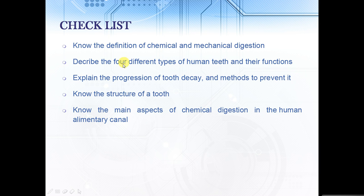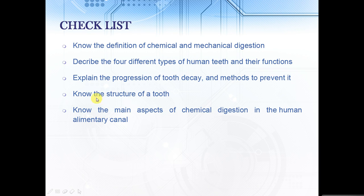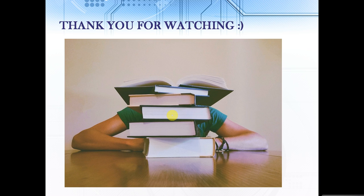Here's a quick checklist of what you should be able to know: the definition of chemical and mechanical digestion, the four types of human teeth and their functions, how to explain the progression of tooth decay and the methods to prevent it, the structure of a tooth, and the main aspects of chemical digestion in the human alimentary canal. Thank you for watching and I'll see you next time.